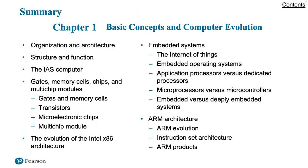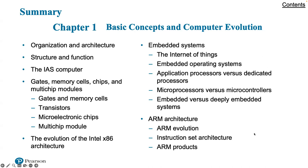We'll be covering the organization and architecture, structure and function of computer systems. We'll introduce the IAS computer, which relates to the development of computers and personal computers. We'll talk about what computer architectures are made of — gates, memory cells, chips, and multi-chip modules — the evolution of the Intel x86 architecture, embedded systems, Internet of Things or IoT, and the ARM architecture including its operating instruction set and the various types of products made available.